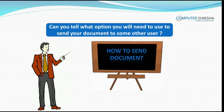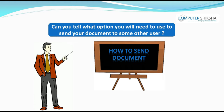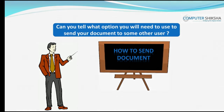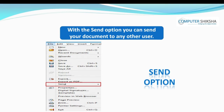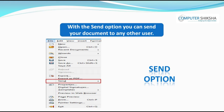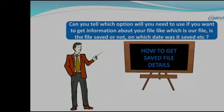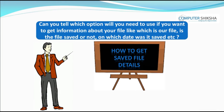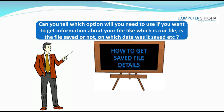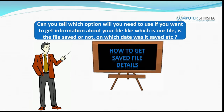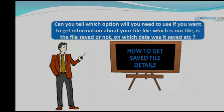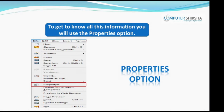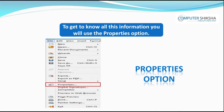Can you tell what option you will need to use to send your document to another user? With the send option, you can send your document to any other user. Can you tell which option you will need to use if you want to get information about your file — like what is our file, whether it is saved or not, on which date it was saved, etc.? To get all this information, you will use the property option.